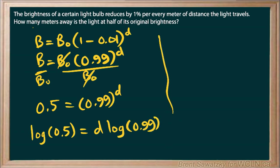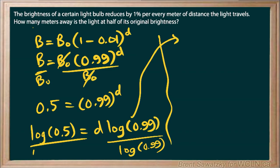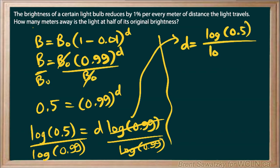What we could do is divide both sides by log 0.99. Whatever we do to one side, we do to the other. These cancel out, and we're left with d is equal to log of 0.5 over log of 0.99.